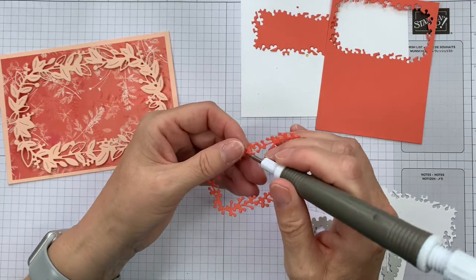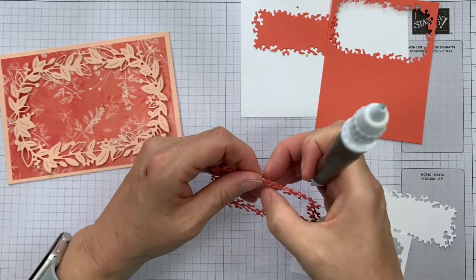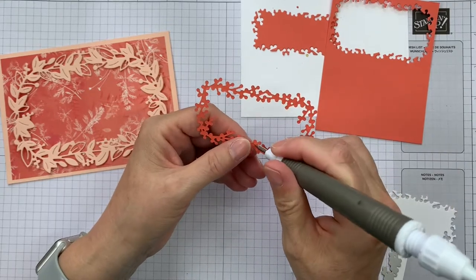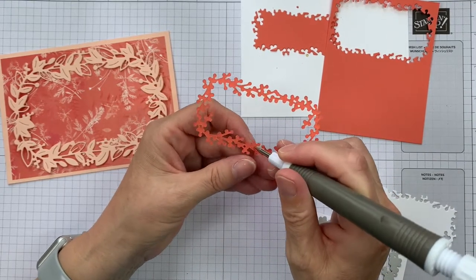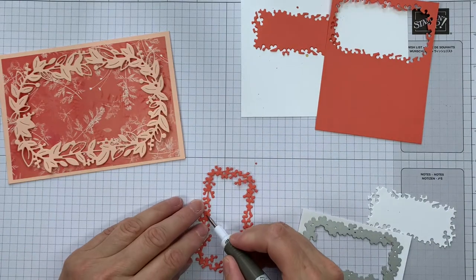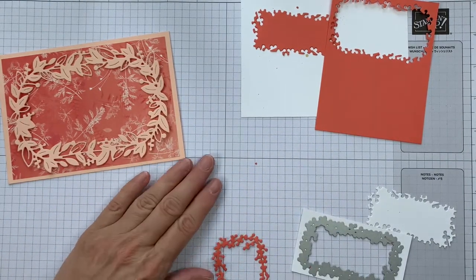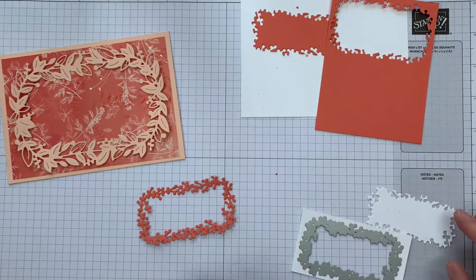Like I said, we're going to jigsaw puzzle this so that we have a darker frame around the white sentiment panel. And if you can hear some noise, it's my dog snoring underneath the craft table, I'm afraid. He likes to be in here with me.